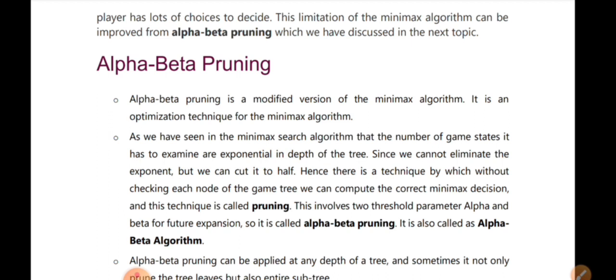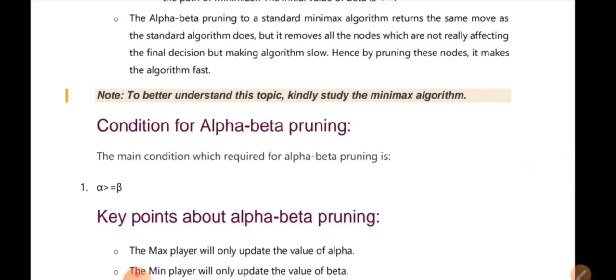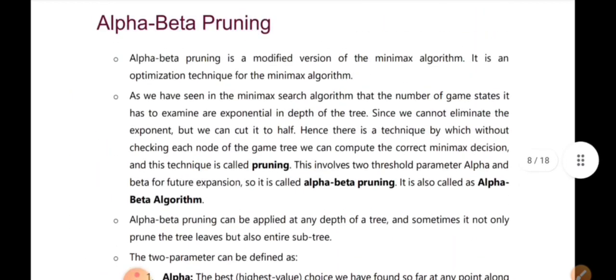Now we are going to do pruning. We are going to take a look at the Min-Max Algorithm. We will consider all the nodes in the tree. We will check the condition of Alpha-Beta Pruning. We will check the nodes in the tree. We have two parameters in the tree: one is Alpha and one is Beta.